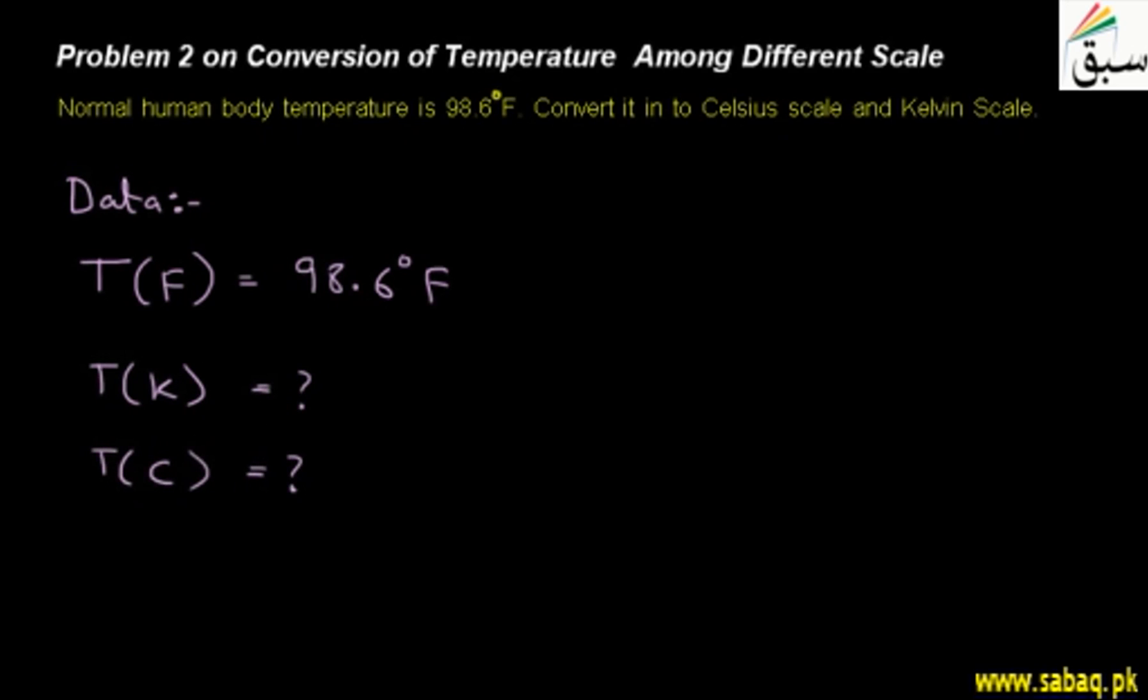Now first of all, if we look at the solution, let's see the solution. We have learned a formula in which we are looking at temperature Fahrenheit and Celsius. We can inter-convert it. We have F is equal to 1.8 degrees Celsius plus 32. This is our formula.